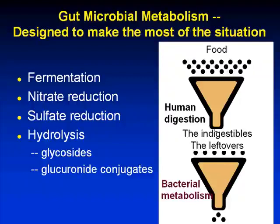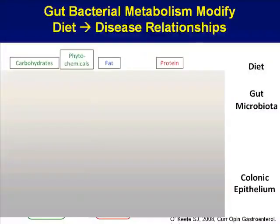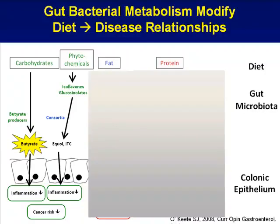When we think about the potential for gut bacteria to modify the diet and disease relationship, it's really through the handling of various dietary constituents and the downstream impact on both the colonic epithelium as well as more distal tissues with regards to disease risk. From the lower cancer risk story — dietary exposures considered as possibly preventive — dietary fiber and resistant starch, other carbohydrates available to gut bacteria, with fermentation producing short-chain fatty acids such as propionate, butyrate, and acetate.